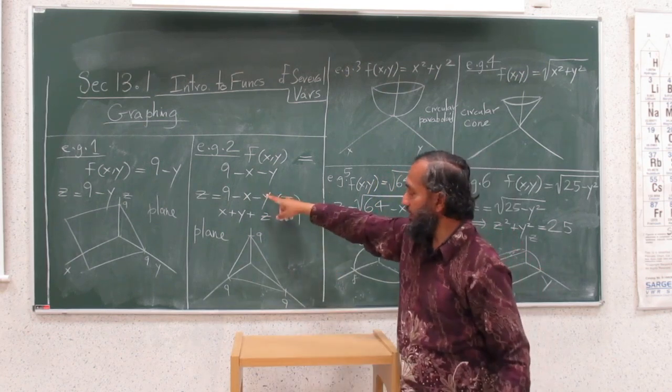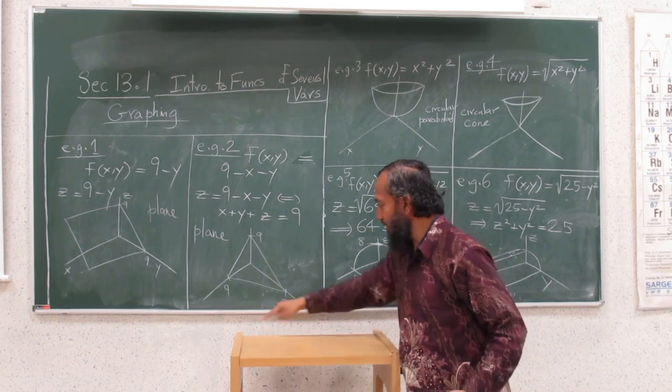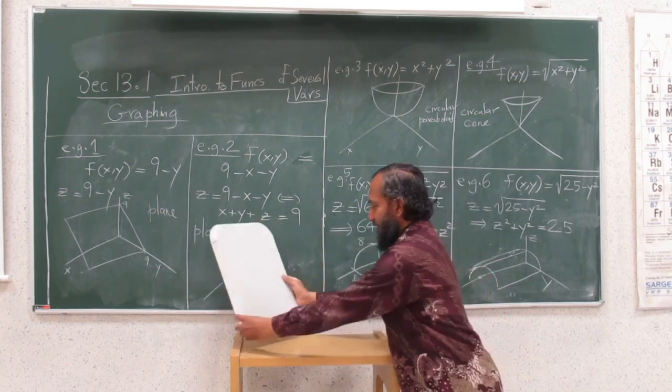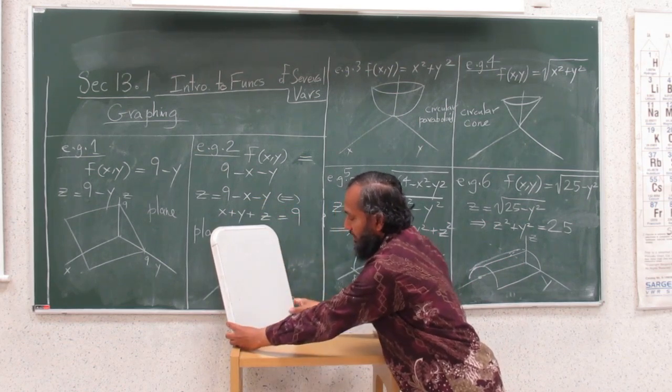On the other hand, this plane, I won't be able to draw perfectly, but it goes through here, this point, this point, and this point. So it's kind of like something like this. That's the point right here on the z, right? So it's like this.